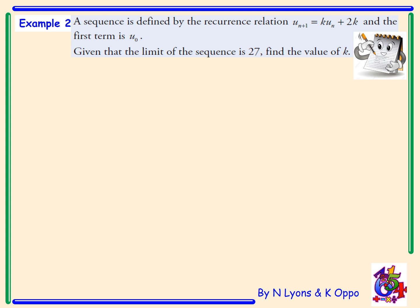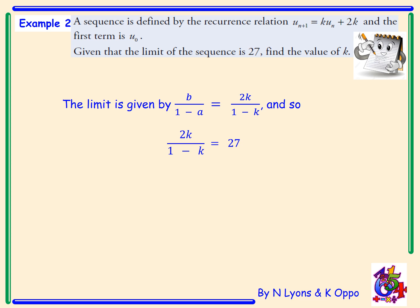Example 2: A sequence is defined by the recurrence relation u_(n+1) = k·u_n + 2k, and the first term is u_0. Given that the limit of the sequence is 27, we need to find the value of k. For this type of question we use algebraic skills and rearranging. The limit is given by b/(1 − a), which for our recurrence relation is 2k/(1 − k). Therefore 2k/(1 − k) = 27.